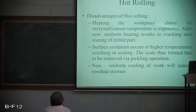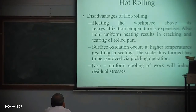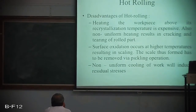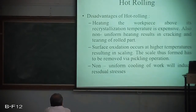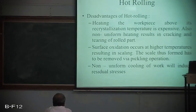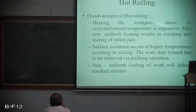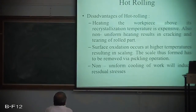The major disadvantages of hot rolling include surface oxidation at higher temperatures resulting in scaling. The scale must be removed by an operation called pickling. Heating the workpiece above recrystallization temperature is expensive and maintaining temperature is also difficult. Non-uniform heating results in cracking and tearing of rolled parts, and non-uniform cooling induces residual stresses.